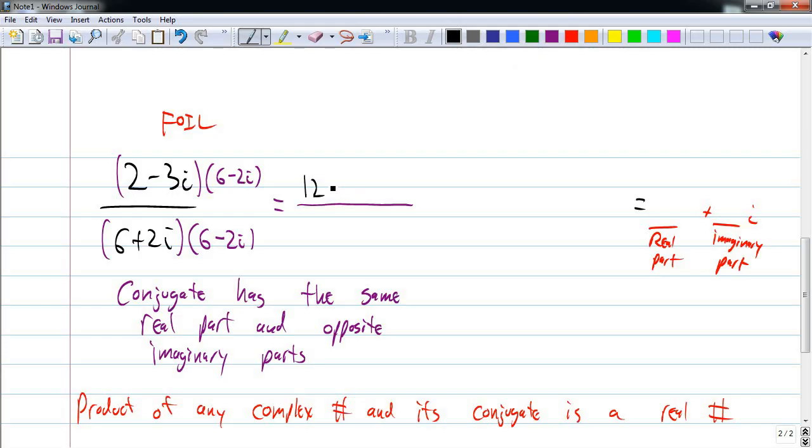First is 12. Outer is negative 4i. Inner is negative 18i. And last is positive 6i squared. And remember that the i squared makes the 6 negative. So I'm going to get 12 minus 6 is 6 minus 22i. That's my numerator.